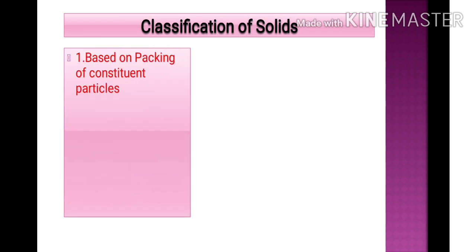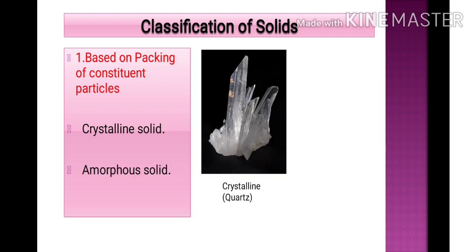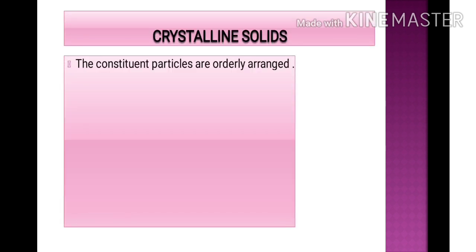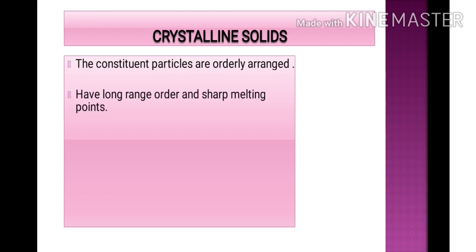The first classification is based on packing of the constituent particles: crystalline solids and amorphous solids, as shown in the diagram. An example of a crystalline solid is quartz, and an amorphous solid example is glass. Crystalline solids have constituent particles that are properly arranged with a long range of order, meaning a regular pattern of arrangement up to long distances.